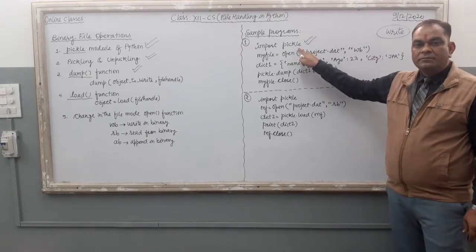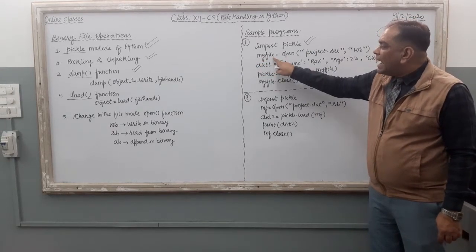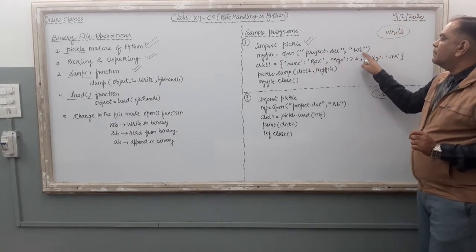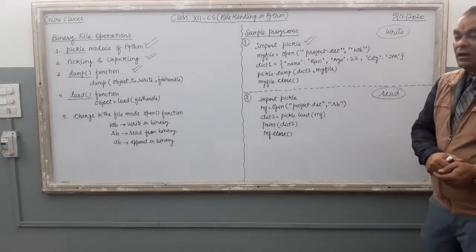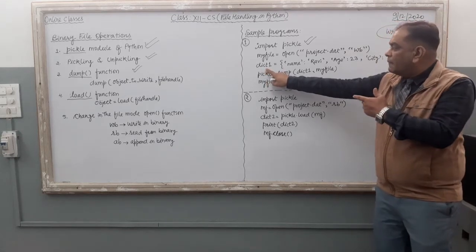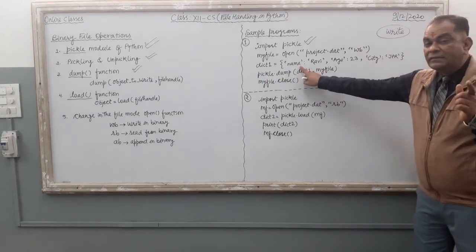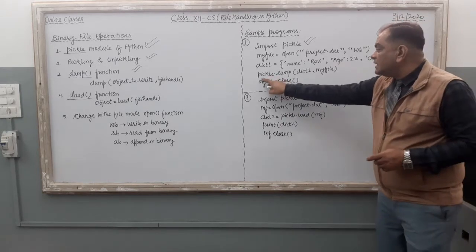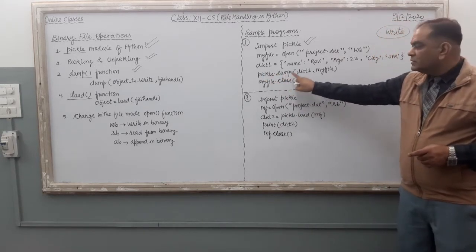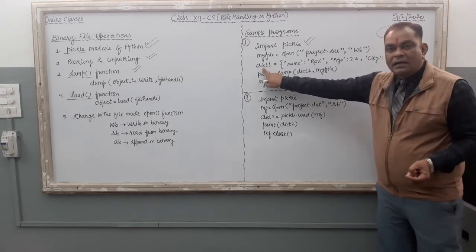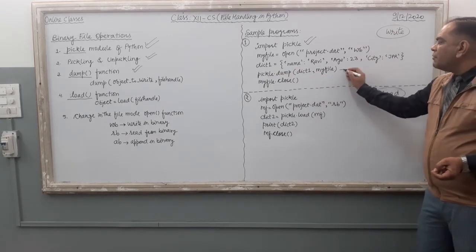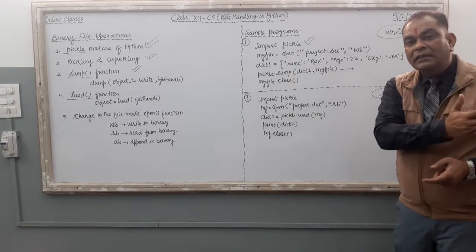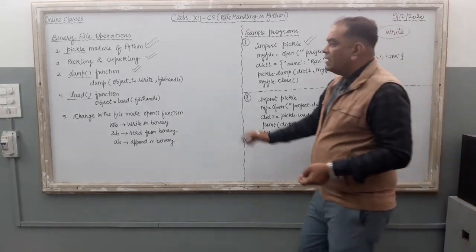In sample program one, we use 'my_file' as the file handle: my_file = open('project.dat', 'wb'). A dictionary variable called dict_one contains three different elements. To write this dictionary data into the file, the command is: pickle.dump(dict_one, my_file). When your computer executes this command, the data inside dict_one is written into the file handle.